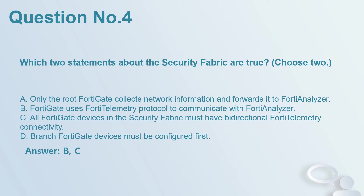Question number 4: Which two statements about the security fabric are true? Choose two. A. Only the root FortiGate collects network information and forwards it to FortiAnalyzer. B. FortiGate uses FortiTelemetry protocol to communicate with FortiAnalyzer. C. All FortiGate devices in the security fabric must have bidirectional FortiTelemetry connectivity. D. Branch FortiGate devices must be configured first. Answer: B, C.